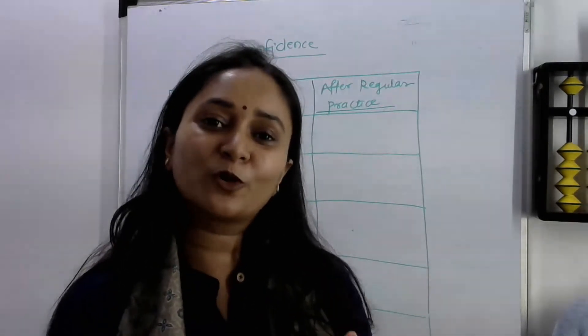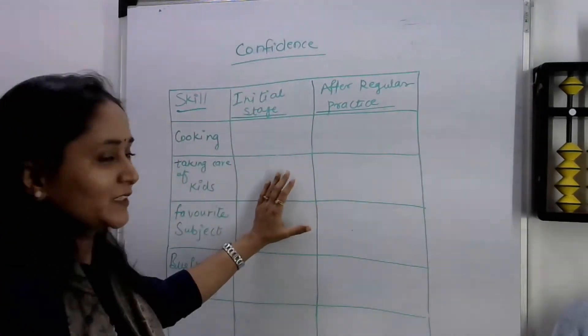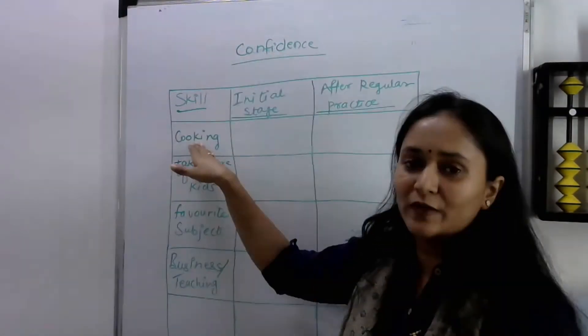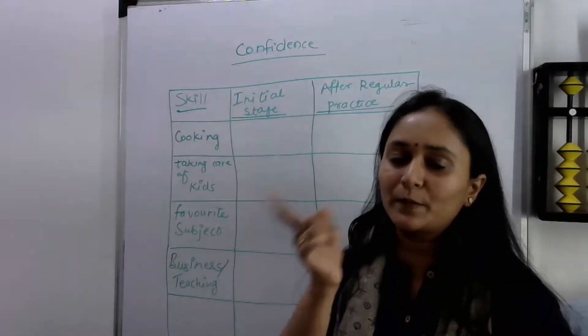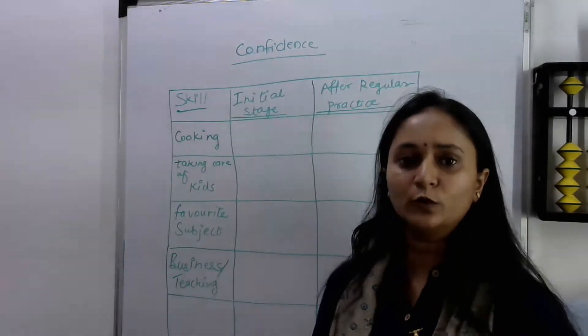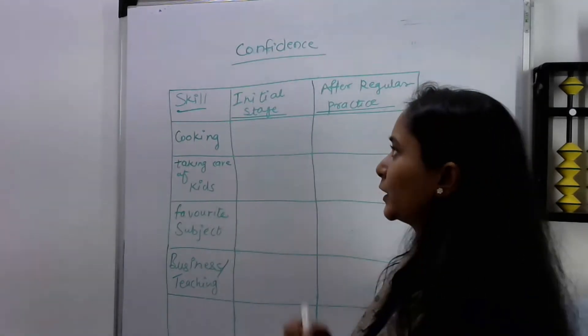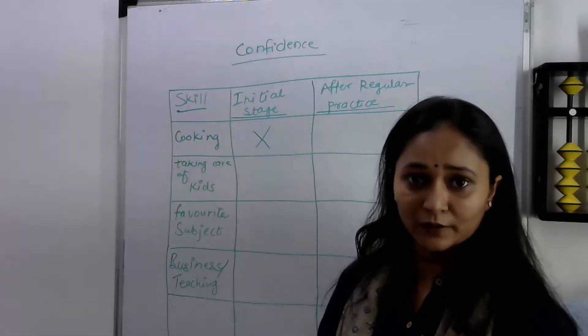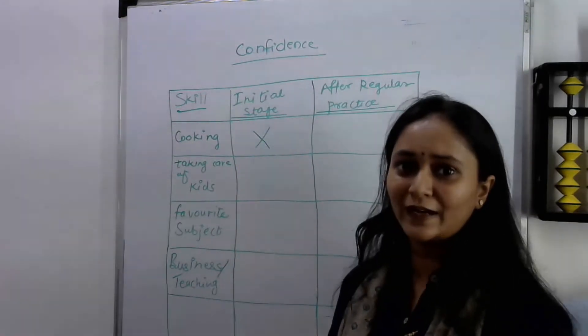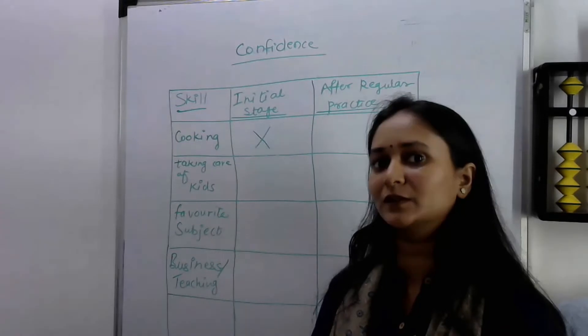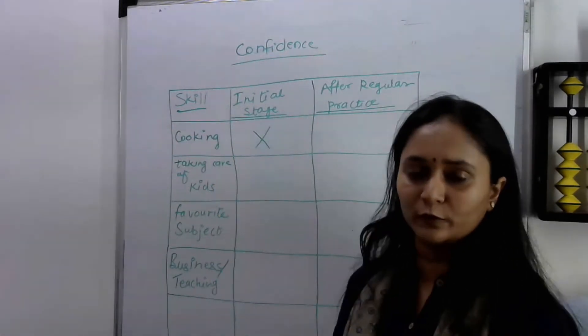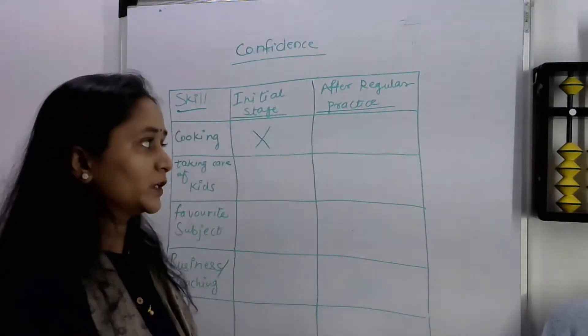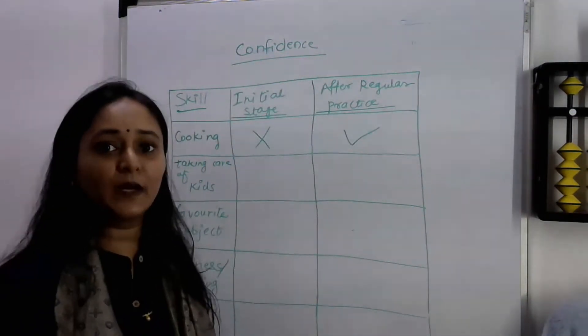I'm going to share my point of view on confidence. So let us understand. You can see this statement—there is first column of skills. First skill is cooking. Remember your first stage of cooking when you started. You were not confident. I was not confident at all in the initial stage. There were a lot of mistakes we were doing, and our mother, mother-in-law, was scolding us for doing mistakes and helping us prepare food for our family. So initially we were not confident, but slowly and gradually, when we started doing this regularly, we built that confidence.